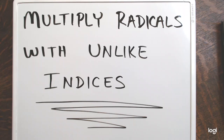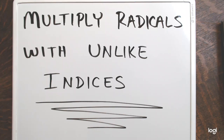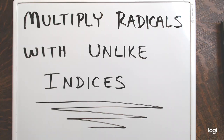Hello and welcome to this video on multiplying radicals with unlike indices. 'Indices' is just the plural of the word 'index.' What we're going to be doing in this video is multiplying two radical expressions in which the indices are different — they're unlike. So multiplying maybe a square root by a cube root, with an index of 2 and 3 respectively, or a cube root by a fourth root, or a square root by a fifth root, and so on.